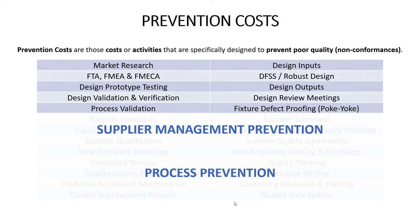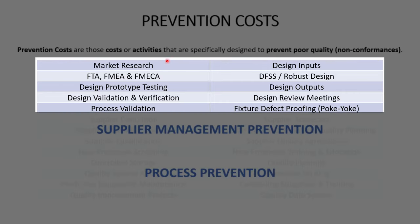On the design side, we have a ton of activities intended to prevent poor quality: market research and voice of the customer analysis, design inputs, robust design or Design for Six Sigma, risk management tools like fault tree analysis or DFMEA, design prototype testing, design outputs, design reviews, design V&V, process validation, equipment fixture, and defect proofing. All of these activities are intended to prevent defects from ever occurring.